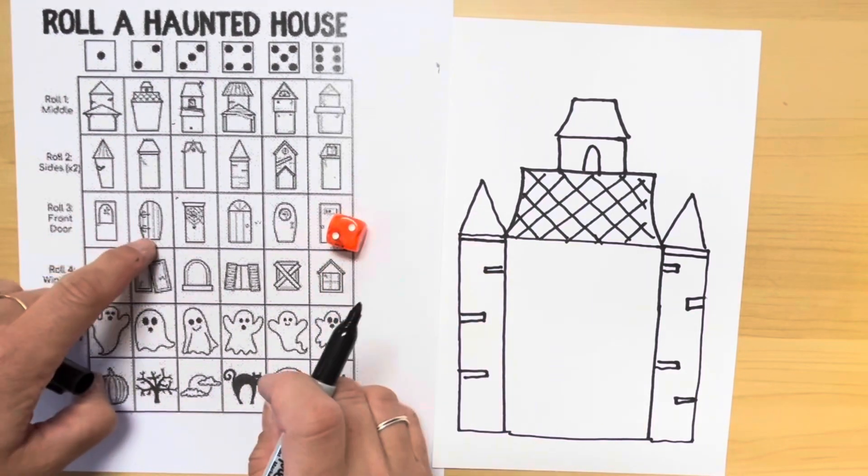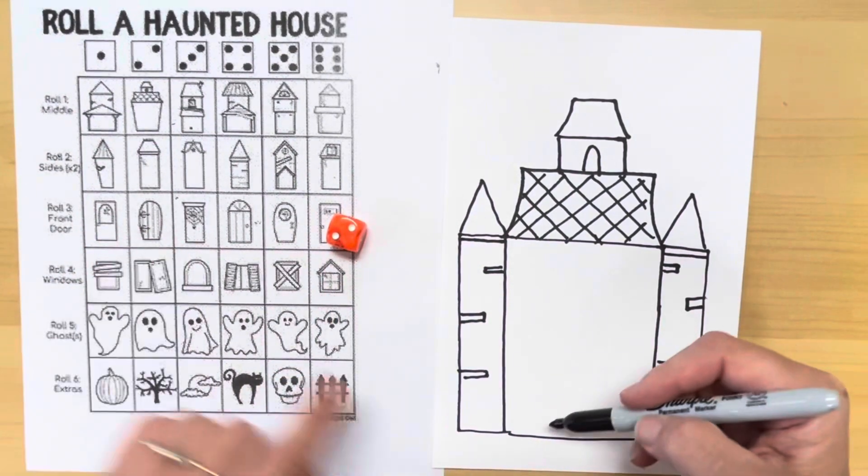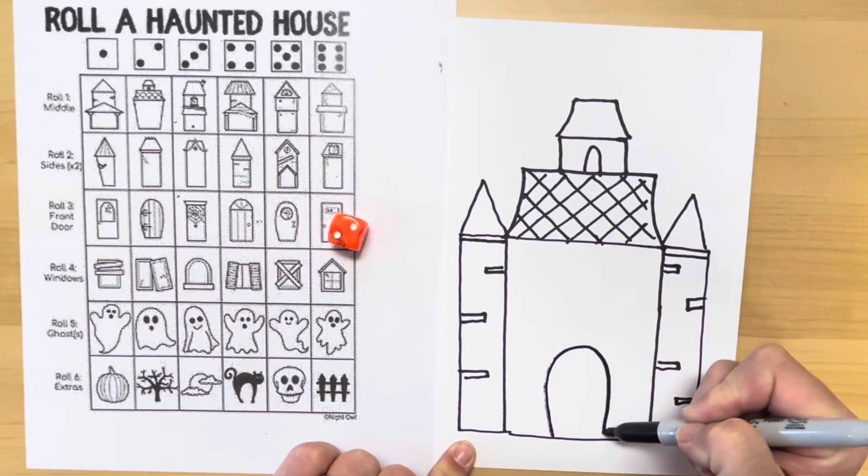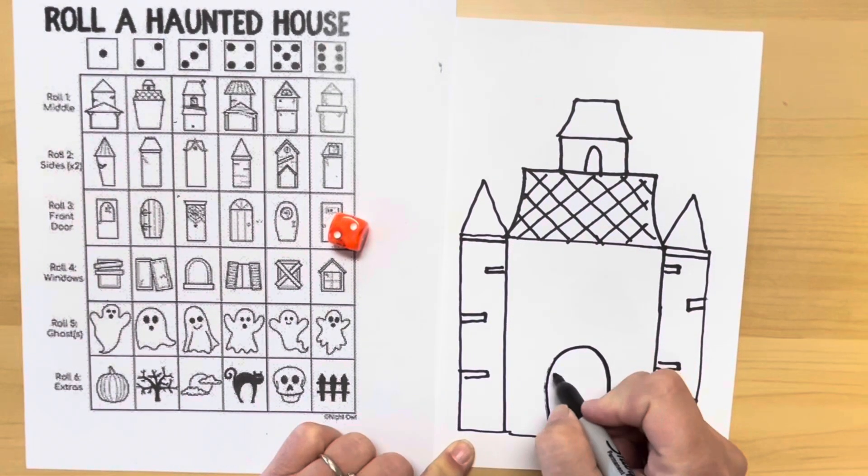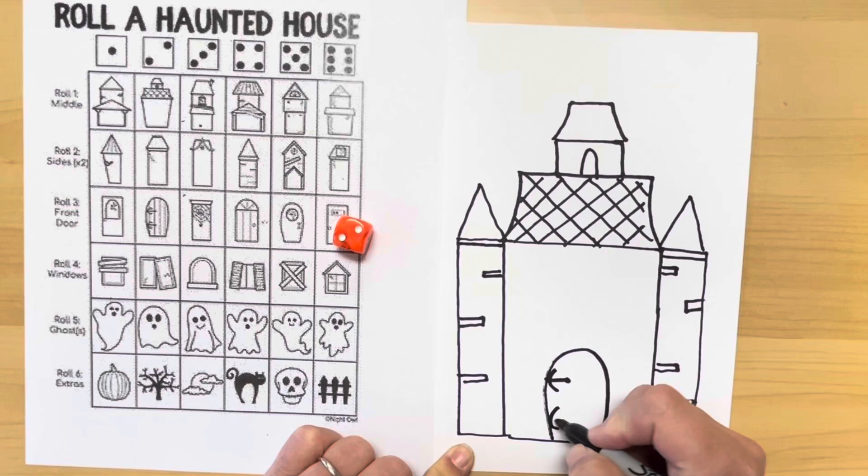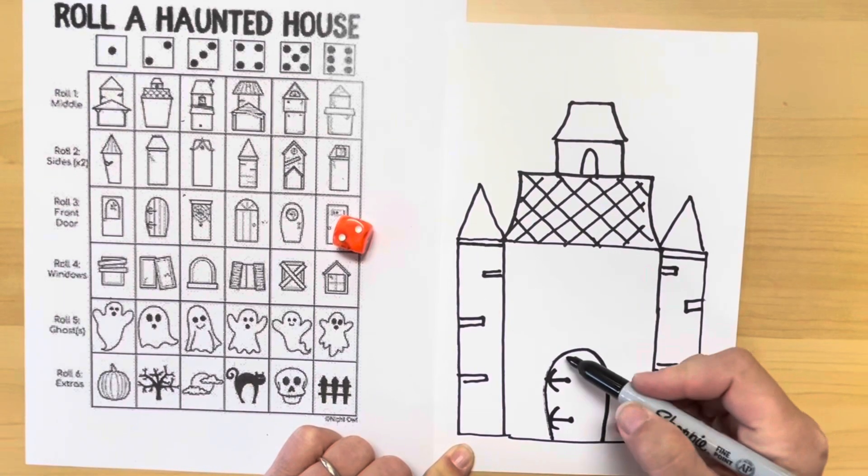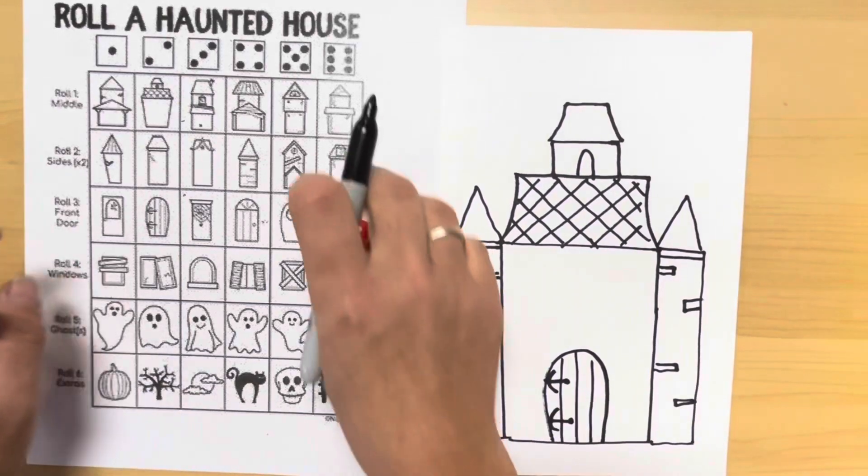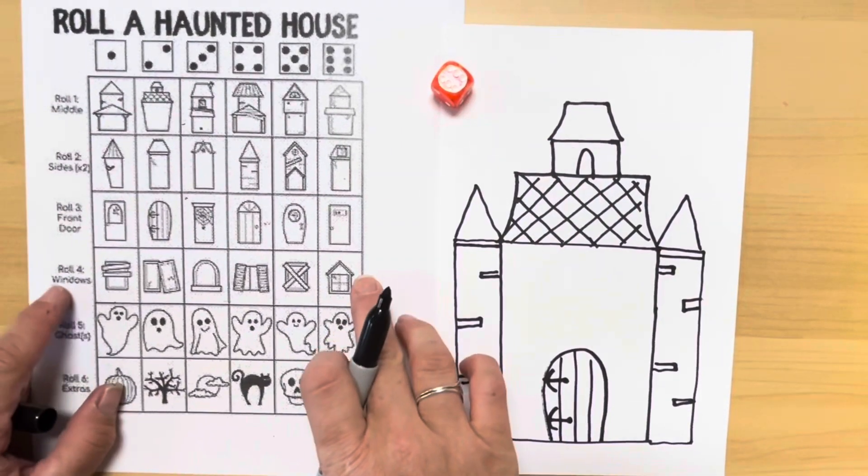Roll three, I rolled a two, so I come over to my door. I get to draw this one with a curved line. It's got some fancy hinges on it, or locks, or I have no idea. Those. And then it's made out of wood. Next roll, roll number four. It says to draw windows.